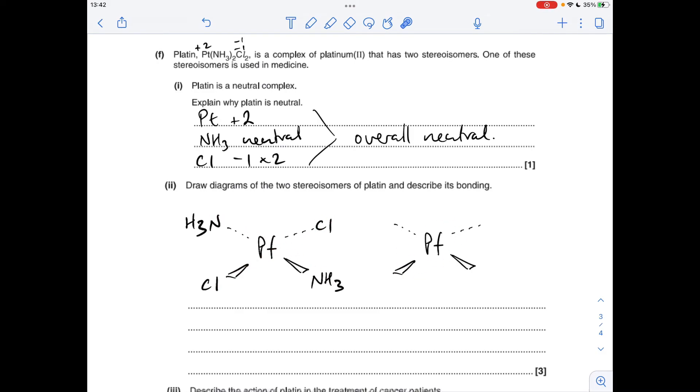Whereas in this one you could put the chlorides next to each other, so in other words they're 90 degrees apart, which obviously means the ammonias go there and there. So the one on the left is the trans isomer, so this would be called trans-platin and the one on the right is called cis isomer.